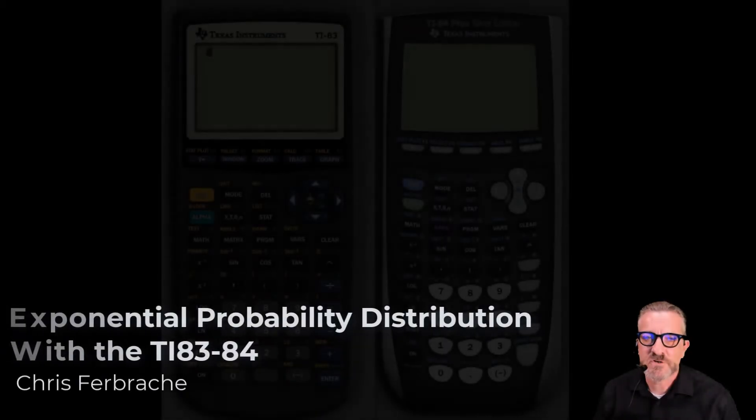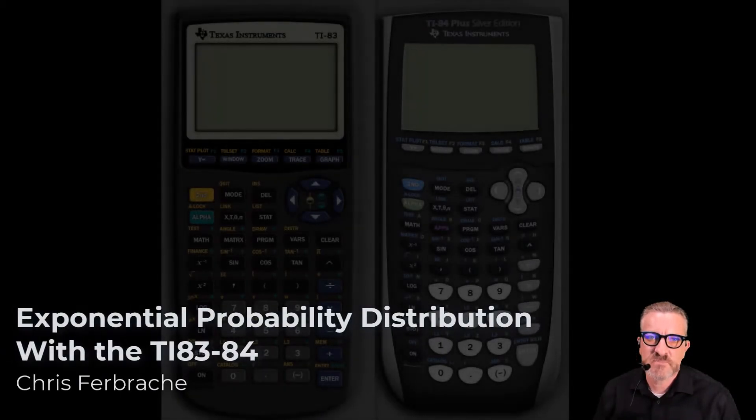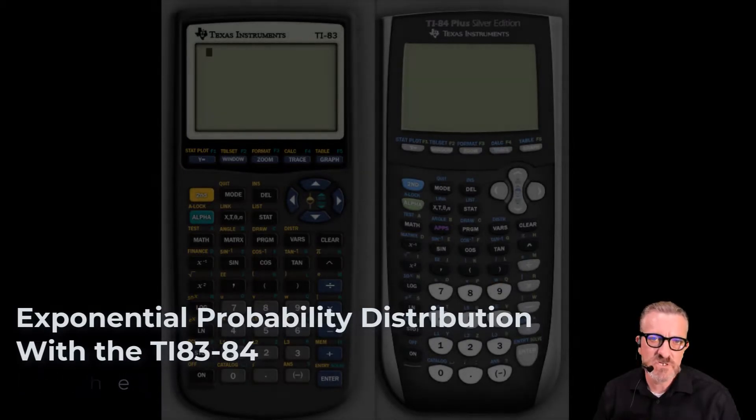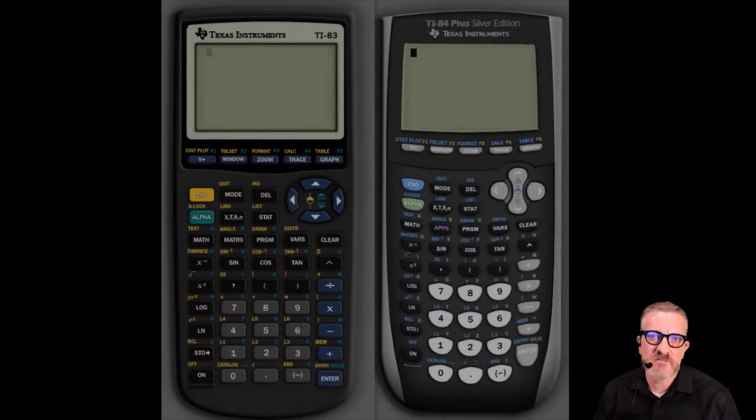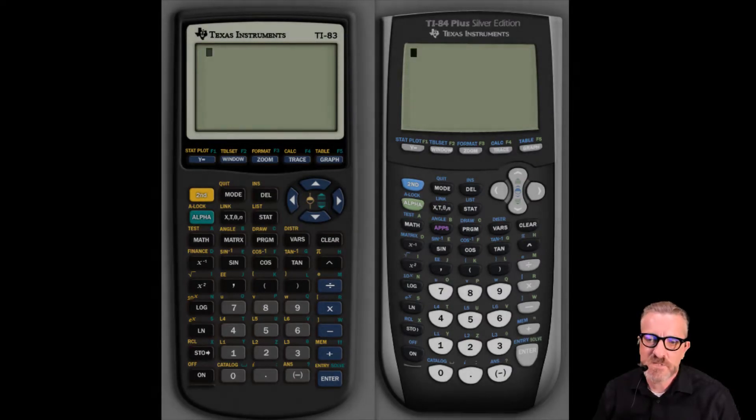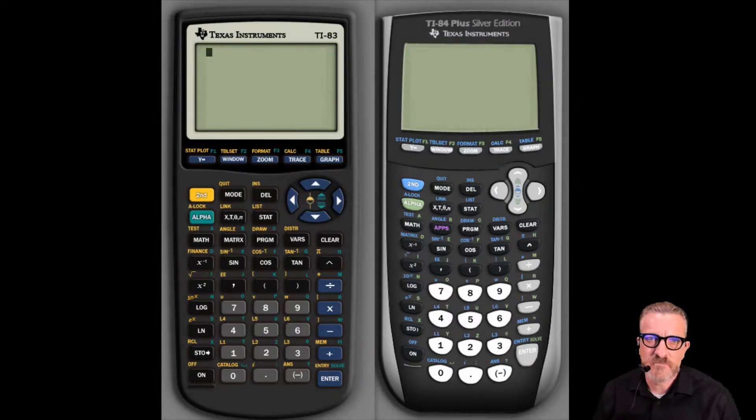I'm Chris Ferbshire and I'm going to review how to perform an exponential probability distribution calculation on the TI-83 and the TI-84 variant calculators. There are a lot of different variants of these but we have some common types of the 83 and 84 that we're going to use.